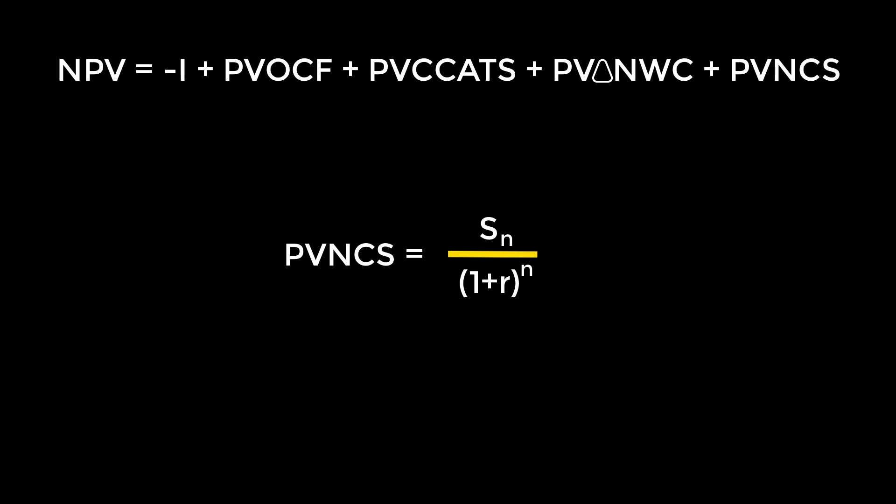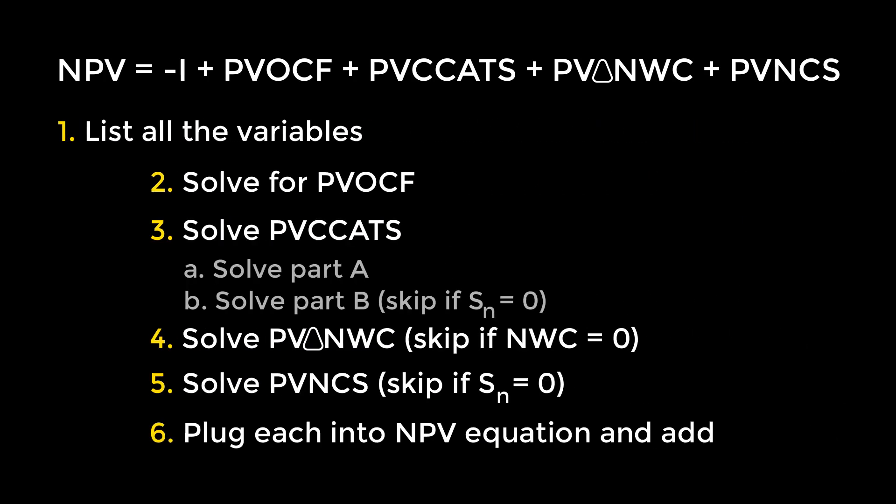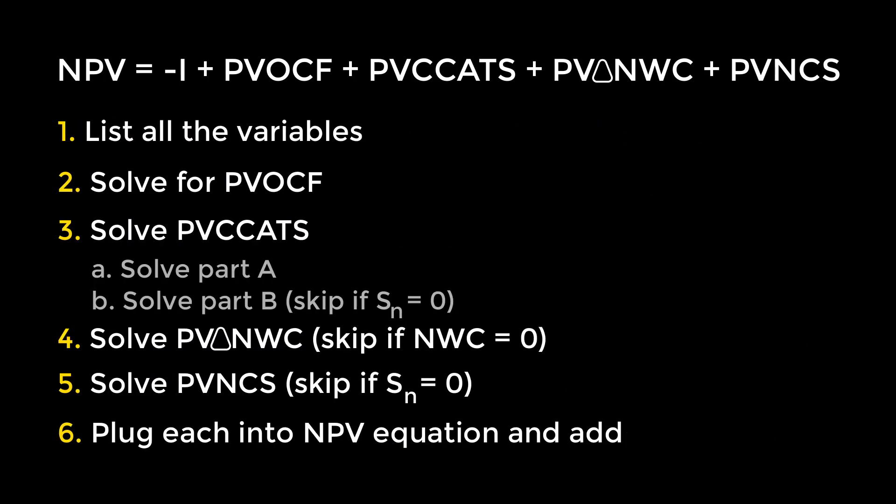So let's explore how to solve an NPV problem by breaking it down into what I like to view as a six-step process. Step 1 is writing down all the variables. Steps 2 through 5 are finding each of the present values, so PVOCF, PVCCATS, PV∆NWC, and PVNCS. And finally, the last step is adding it all together.